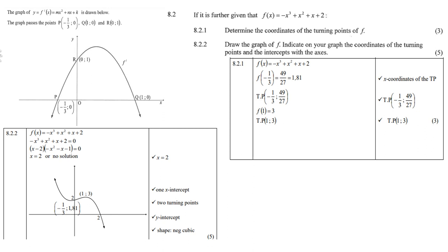Then 8.22, now you must draw the graph of f, indicate on your graph the coordinates of the turning points and the intercepts of the axes. You need to first factorize. My suggestion is first get rid of the negative in front. There's different ways of factorizing this cubic graph. You can use whatever method works for you. Then you get x minus 2 as the first bracket, and you get minus x squared minus x minus 1 as another bracket. Please go and do your research and see whatever methods you can use to factorize. Then you get x equals 2, and the second bracket gives you no solution.